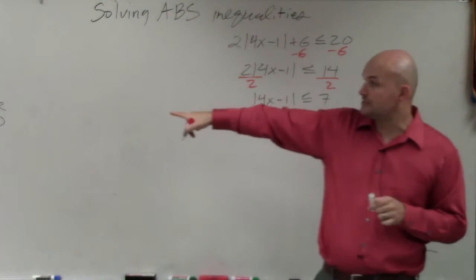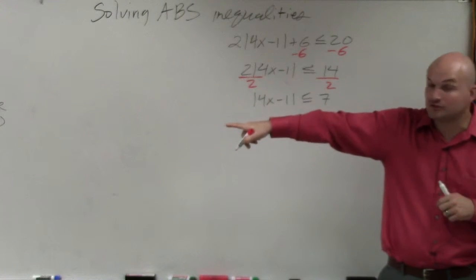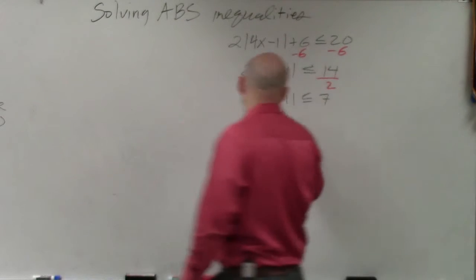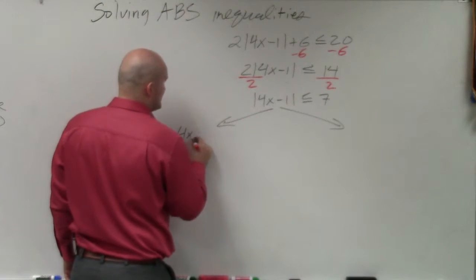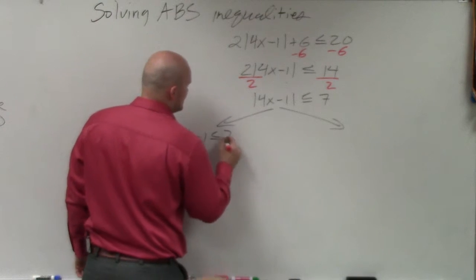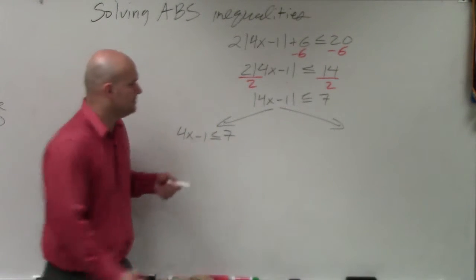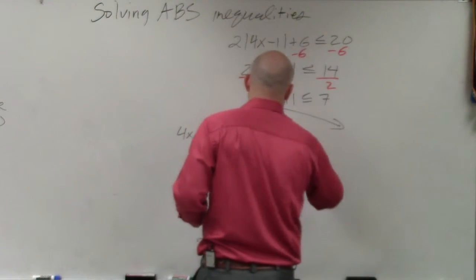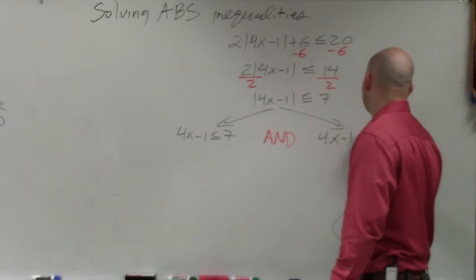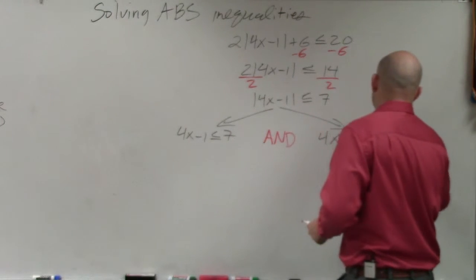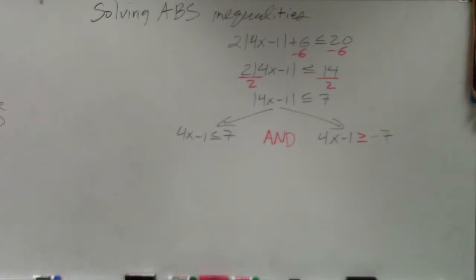Now we have a less than or equal to. So by using step 2, I've got to create my two cases. And since it's less than or equal to, it's going to create an and conjunction. So I do my first case, which is basically just the exact same inequality without the absolute value. And then it's an and conjunction. And then the other one, I have to make sure I negate my side. So I'm going to flip the inequality.